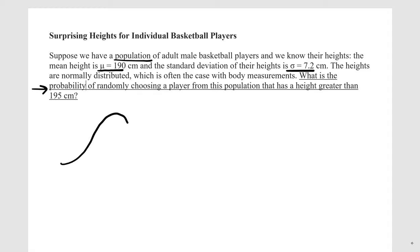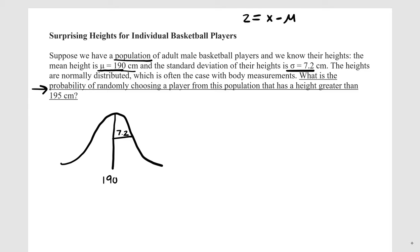I know that it is normally distributed, because it says so in the problem. So there's my shape. I'm going to draw in my center, which is the mean — 190 centimeters — and then my standard deviation, which is 7.2 centimeters. Now in order to answer this question, we're going to have to use either a Z formula or a T formula. So let me write the different options we have: we have Z with just sigma on the bottom, and Z with the standard error on the bottom.